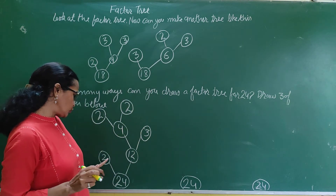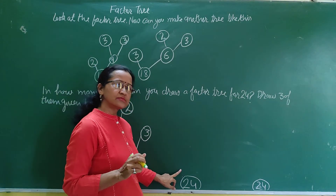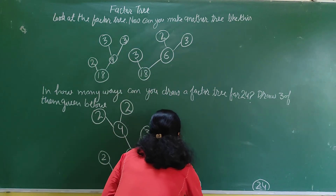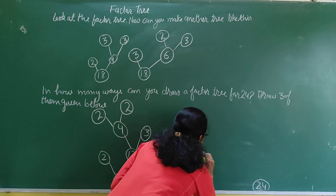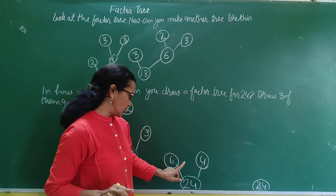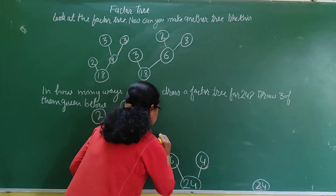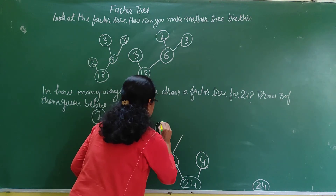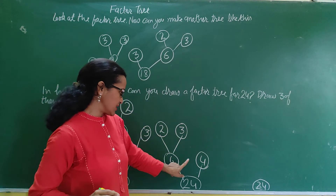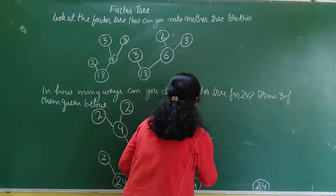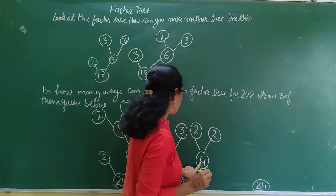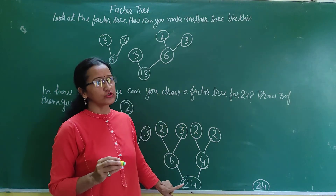Now we can make the factor tree of 24 in another way. Here we can break as 6 fours are 24. Now we can break 6, so 2 threes are 6. Write 2 and 3. And break 4, so 2 twos are 4. Write 2 and 2. So this is the factor tree of 24.